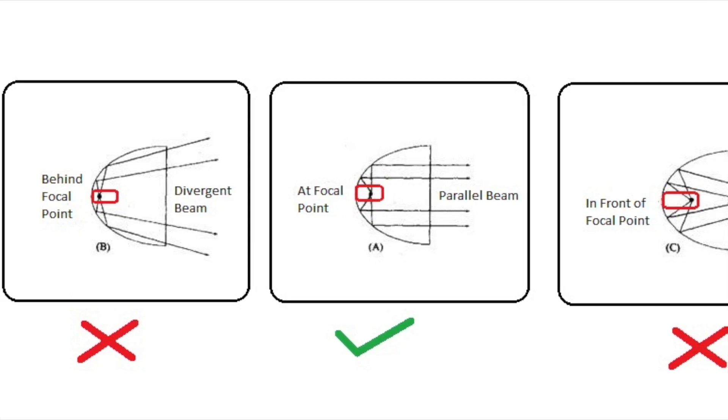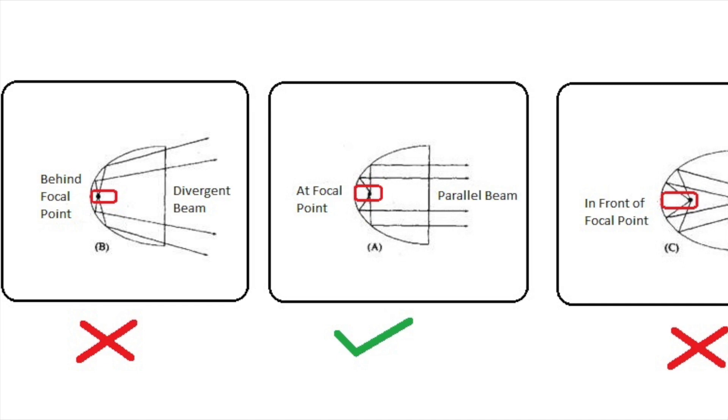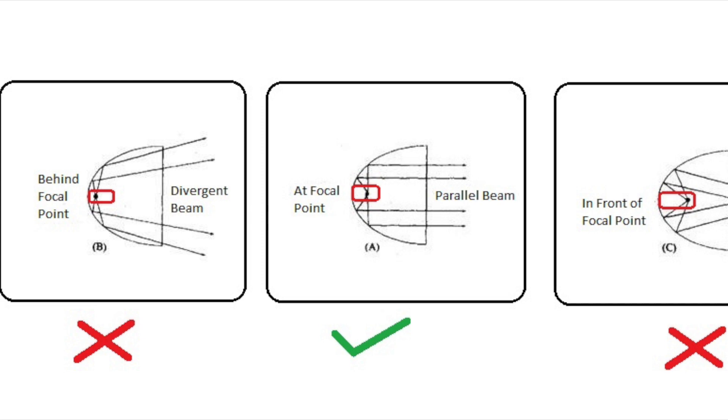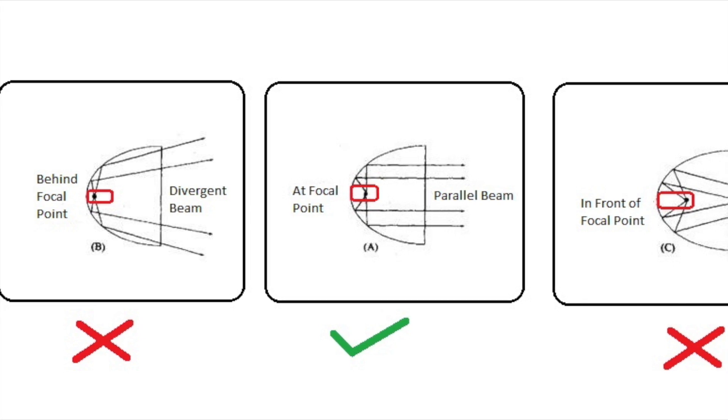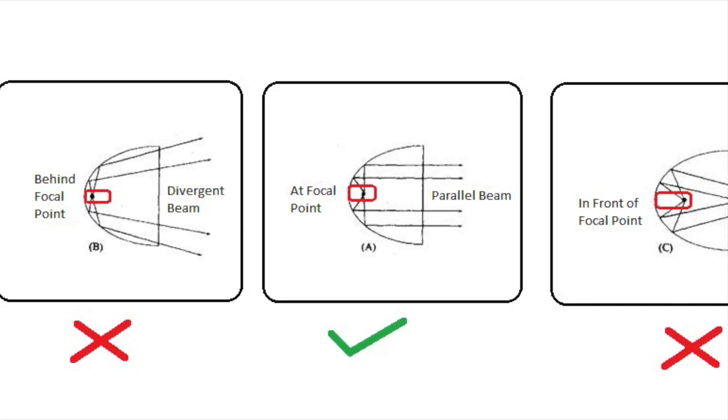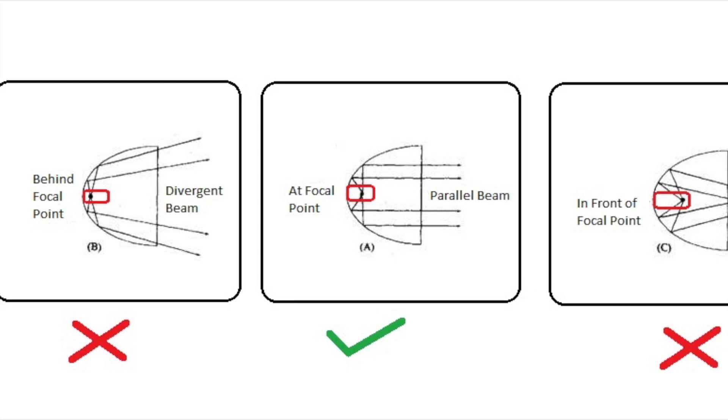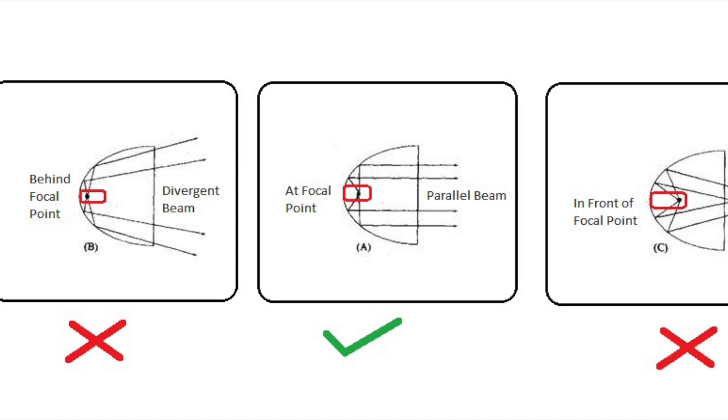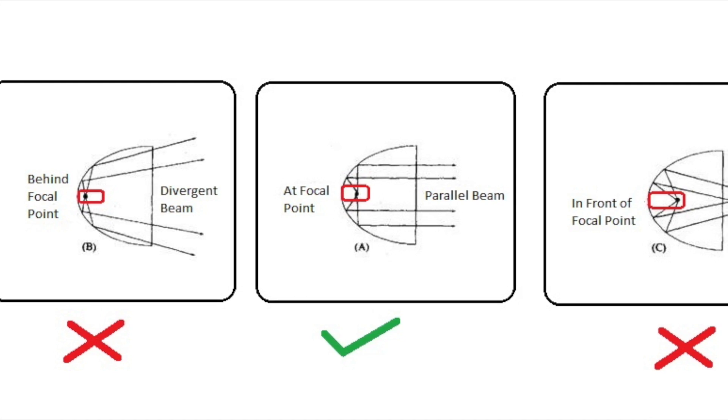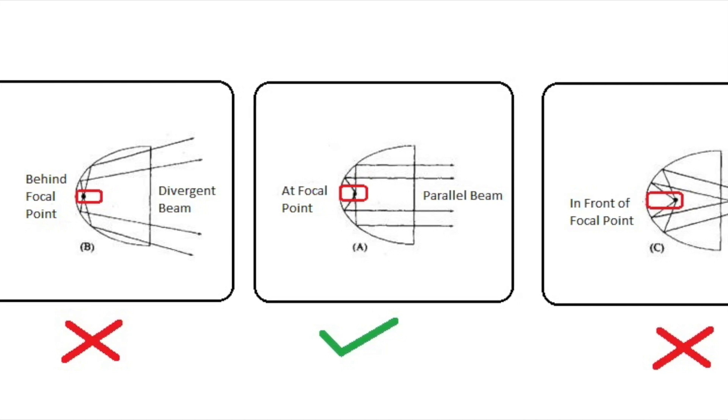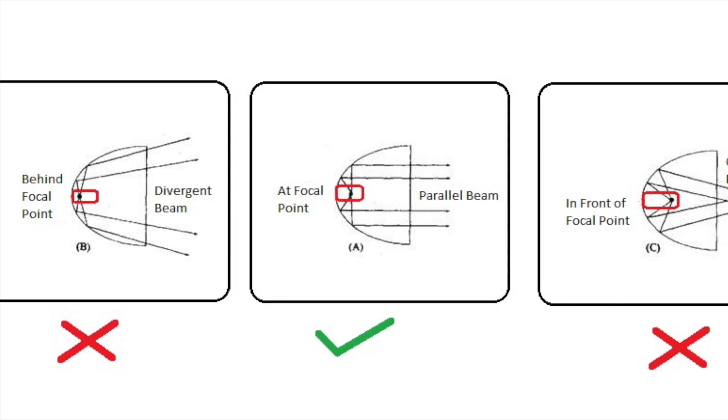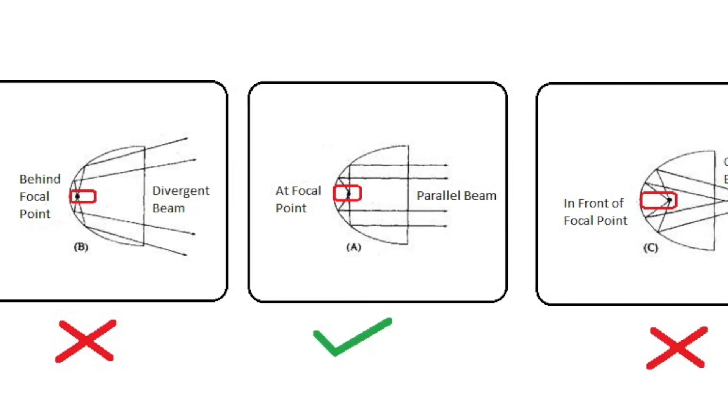Placement of the filament on the bulb is very crucial. As in the image below, you can see the filament for the extreme left image - the filament is behind the focal point of the reflector. What is happening over here is light is getting reflected multiple times through the reflector and is getting divergent, like it is getting scattered all over the place.